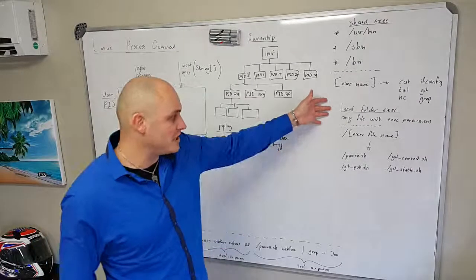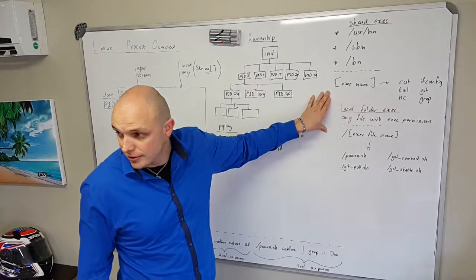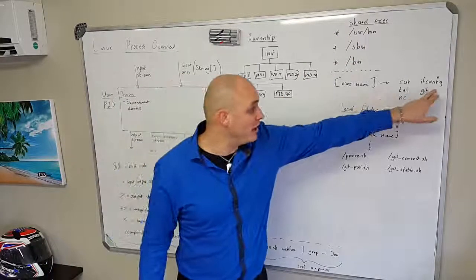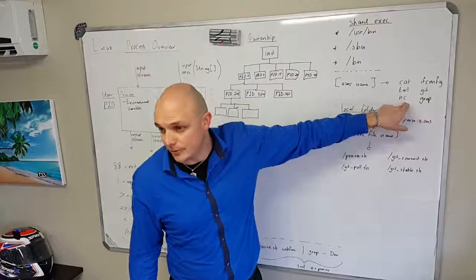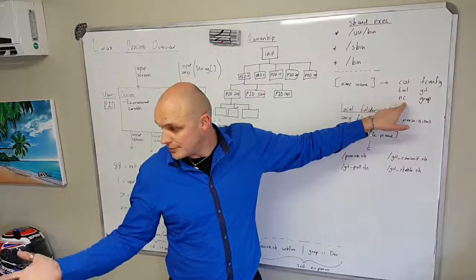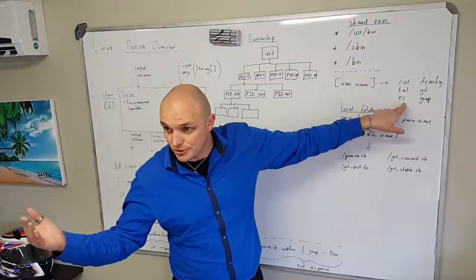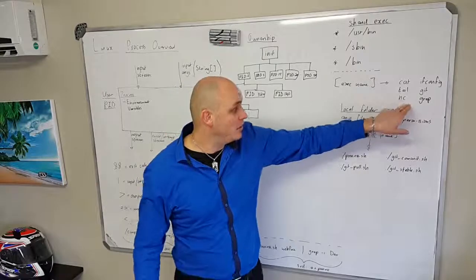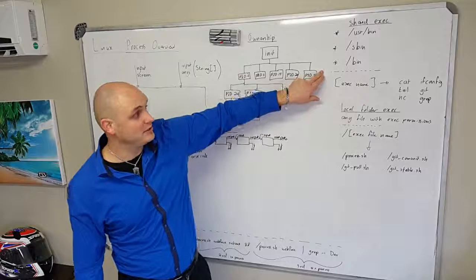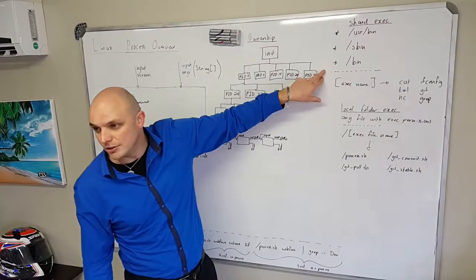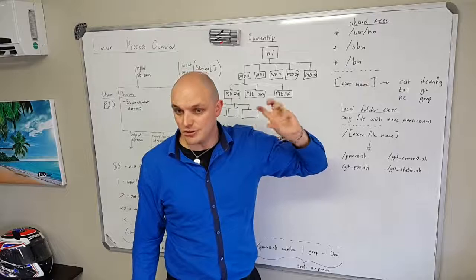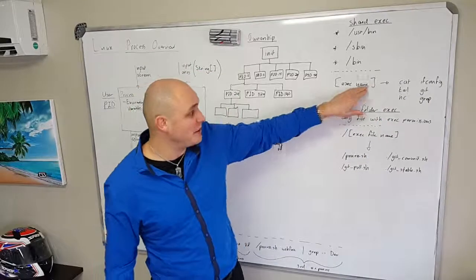Now, executing processes on the command line. There are two ways. First, shared executables — things like cat, ifconfig, tail, git, grep, netcat, shutdown, reboot, netstat. These are executable files that reside in certain directories, similar to the PATH in Java. When you type something, it searches those directories and if it finds a file there it executes it. To execute one, you just type the file name.